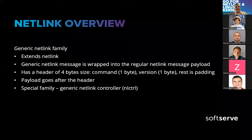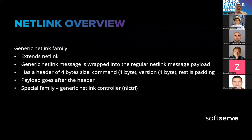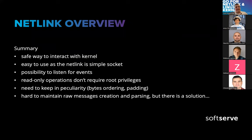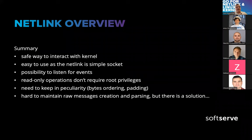Generic Netlink subfamilies extend existing Netlink — generic Netlink messages are wrapped into regular Netlink messages in the payload, with the same 4-byte padding and header structure, plus the NLCTRL family to stay in control of your generic Netlink families. In summary, Netlink is the safest way to interact with the Kernel. It's easy to use — you can deal directly with just a socket, manage packets yourself, or use libraries. And you have the possibility to listen to events.